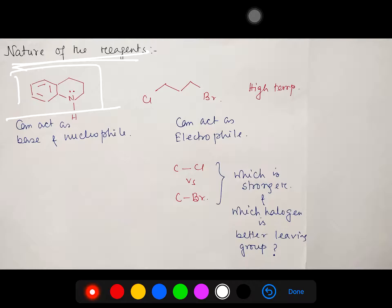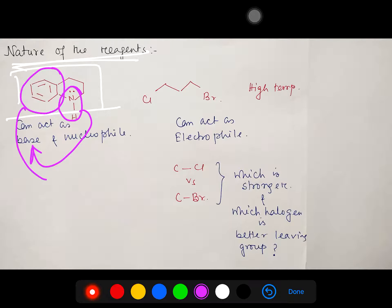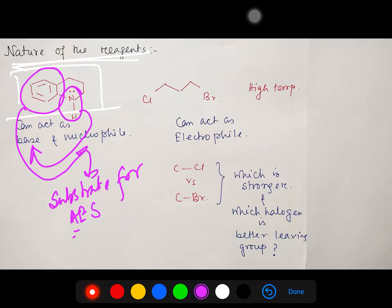This molecule has two types of reactivity. One contains a nitrogen attached directly to the benzene ring, and the other is the benzene ring itself. The nitrogen can act as a base and as a nucleophile, and the benzene ring attached to nitrogen can act as a good substrate for aromatic electrophilic substitution. I have uploaded many videos about aromatic electrophilic substitution — please visit those if you need more knowledge.